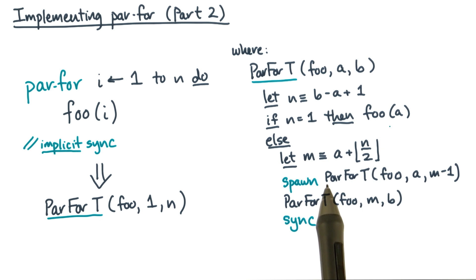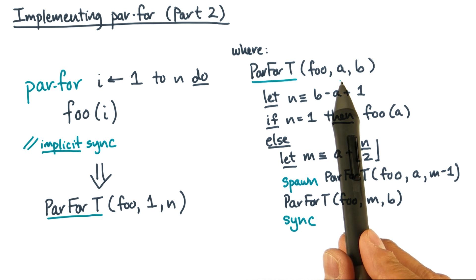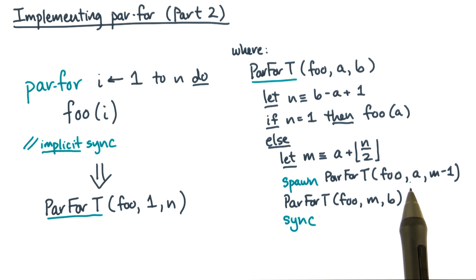Otherwise, we'll do divide and conquer, essentially breaking the iteration range a to b into a to m minus 1 and m to b, where m is approximately the midpoint.